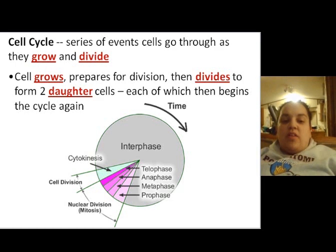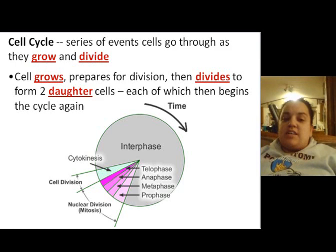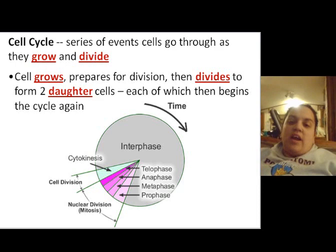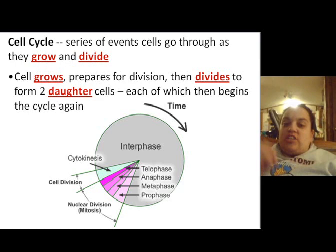The cell cycle is a series of events that cells go through as they grow and divide. Cells grow, prepare for division, then divide, each of which then begins the cycle again. We're going to go through the cycle of interphase, which is what the cell spends the majority of its time in, and then we're going to talk about each of the stages of division, which is mitosis.